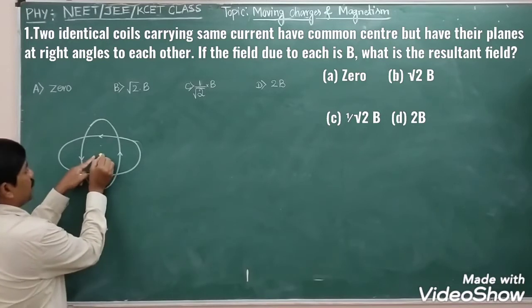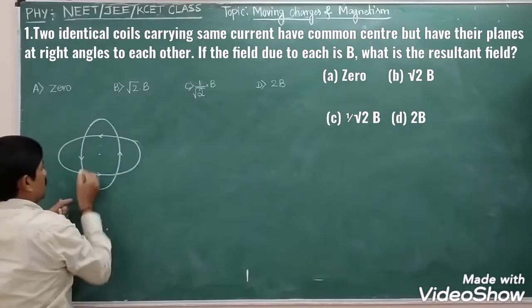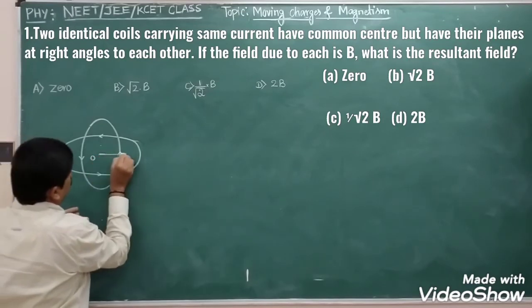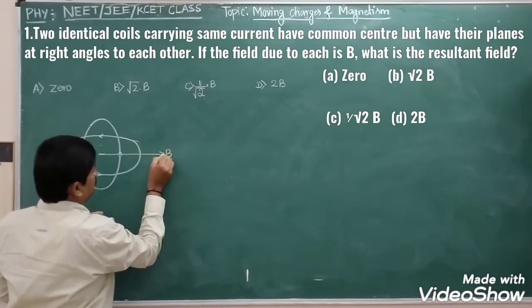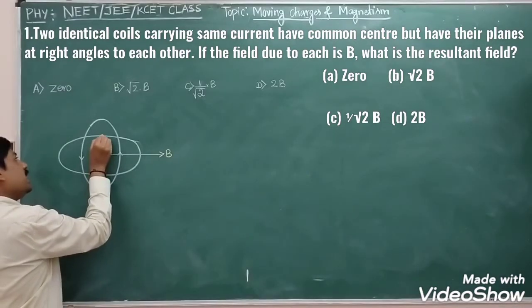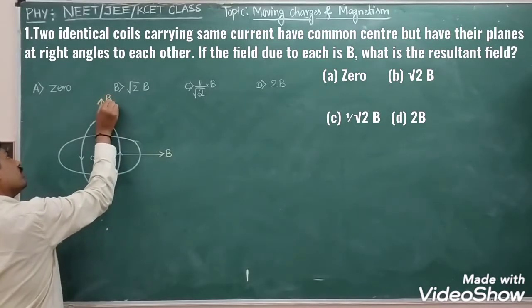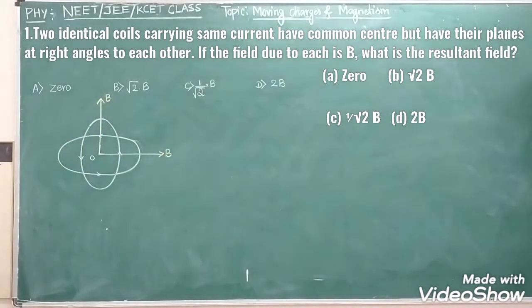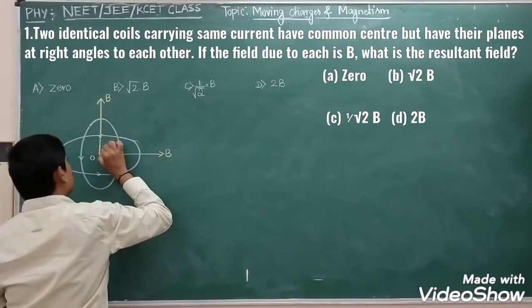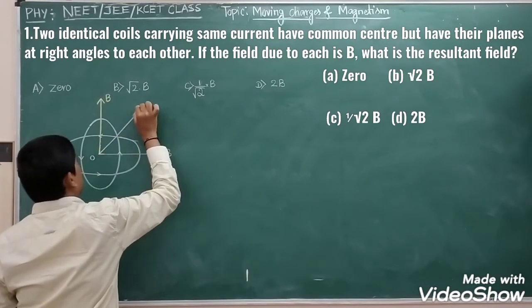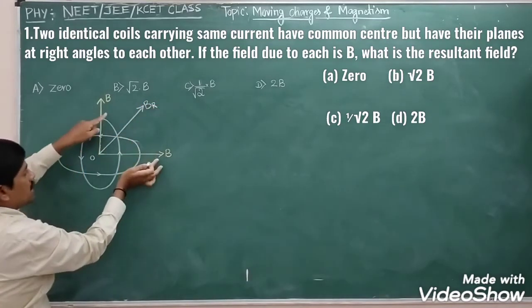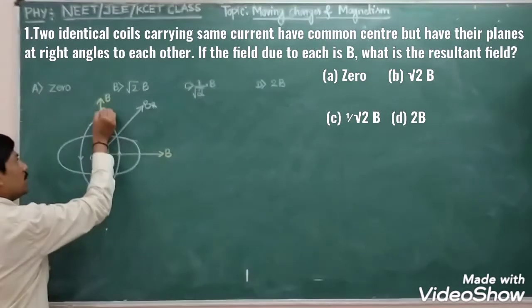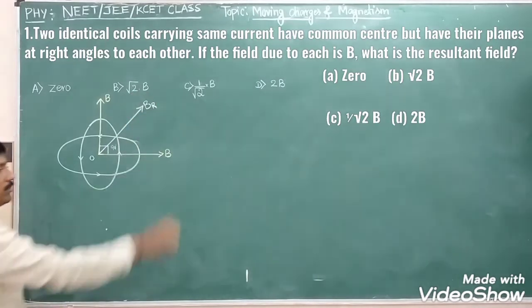The magnetic field due to the first coil is B, with common center O. The magnetic field due to the second coil is also B, as given in the problem. Since the two fields are perpendicular to each other, the resultant of these two fields is BR. The angle between the two fields is 90 degrees.